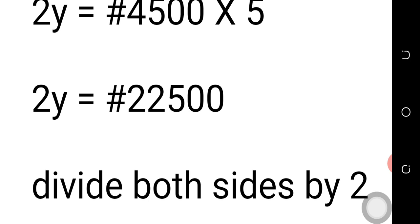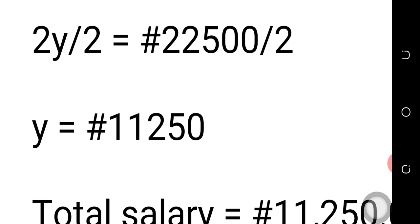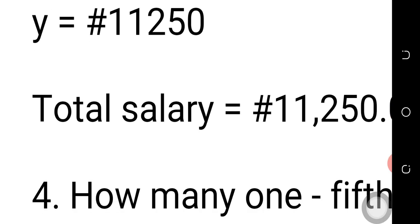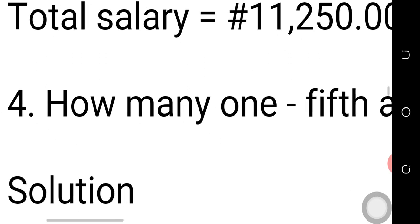By division, we divide both sides by two in order to get the coefficient of Y. So two Y over two equals twenty-two thousand five hundred divided by two. Two cancels two, and we get Y equals eleven thousand two hundred and fifty.